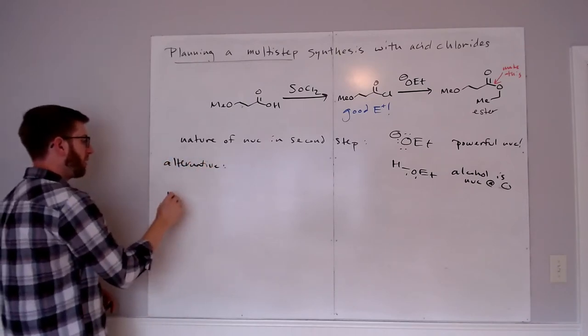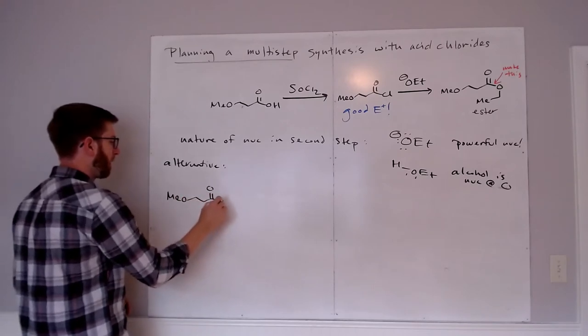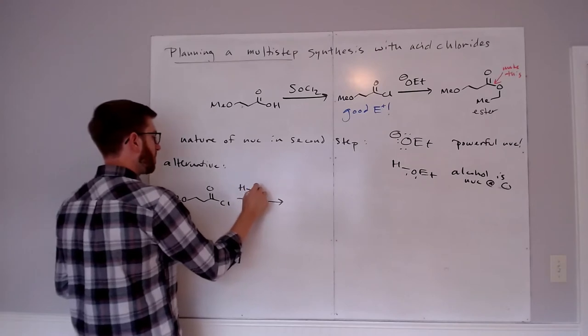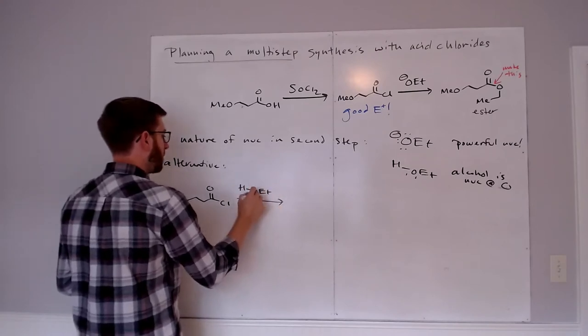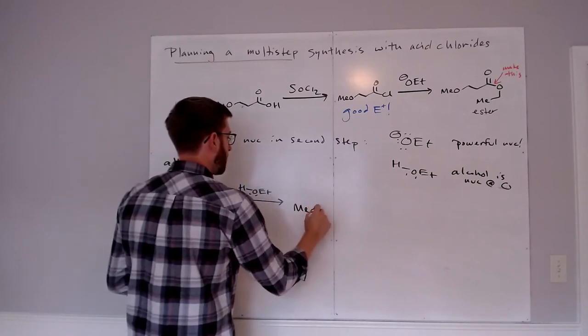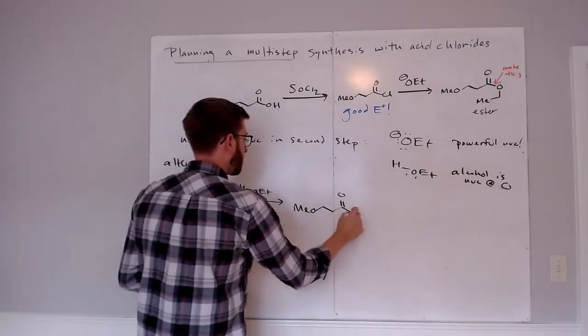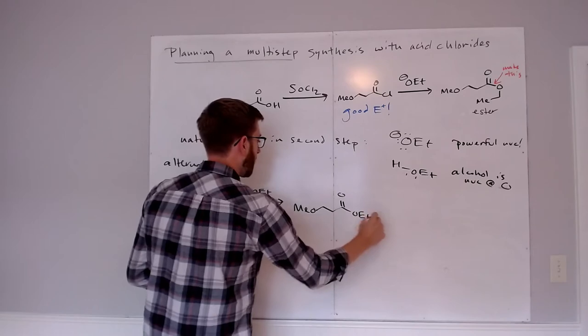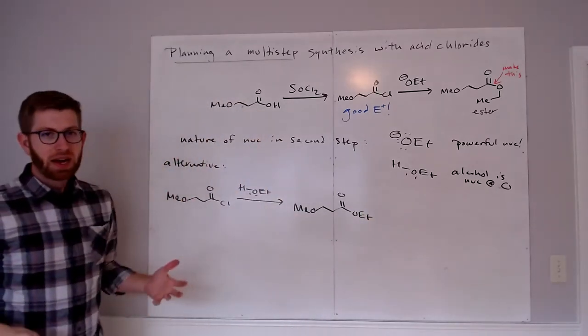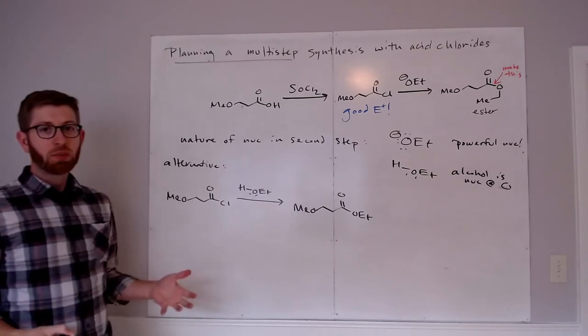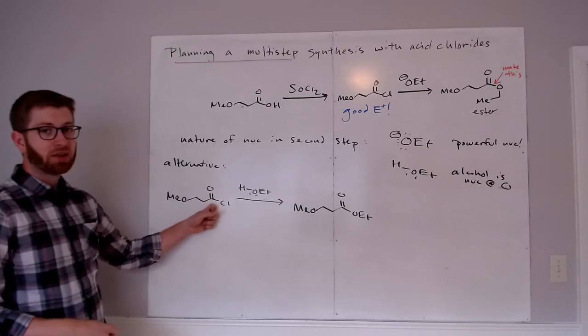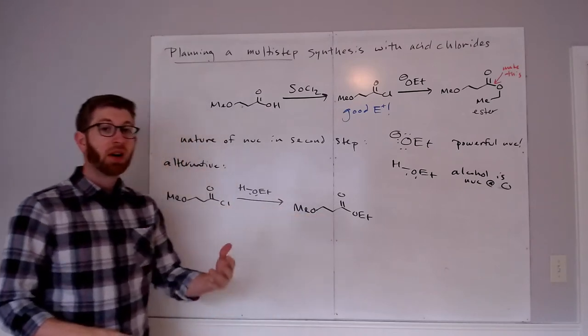So our alcohol is nucleophilic at oxygen, it's less nucleophilic than O-, but that might not matter. So let's look at this alternative second step then. We've got our acid chloride, and we're going to react this with our ethanol. We've got lone pairs, so nucleophilic at some level, and that should give the desired ester. Works fine. You could do this reaction, it would be very fast, and it also turns out to be quite favorable.